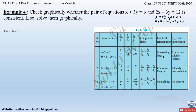When the lines are intersecting or coincident we can say that the two equations are consistent. To find this out, we compare the coefficients. If a₁/a₂ ≠ b₁/b₂, the lines are intersecting with a unique solution and are consistent. When a₁/a₂ = b₁/b₂ = c₁/c₂, the lines are coincident with infinite solutions — also consistent.